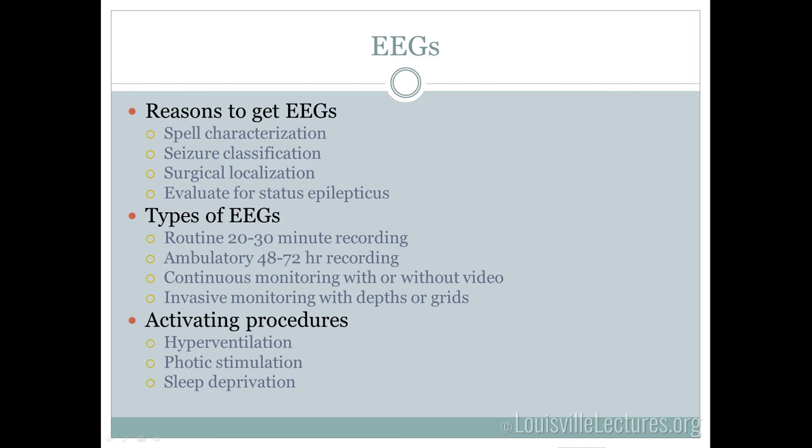EEGs also help with surgical localization for patients who have failed medications and are being considered for surgical interventions, so we can see exactly where seizures are coming from. And we get EEGs to evaluate for status epilepticus — if someone is confused after a prolonged seizure or there's any concern about ongoing status, an EEG can evaluate for that.